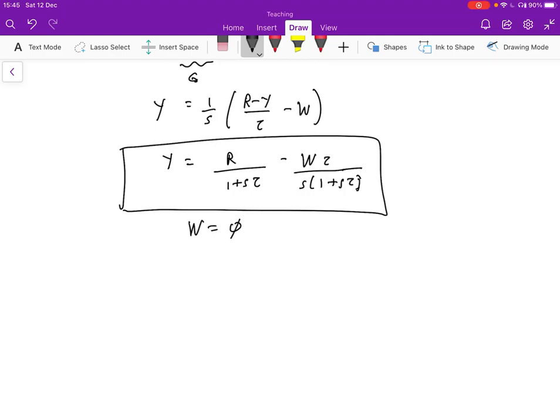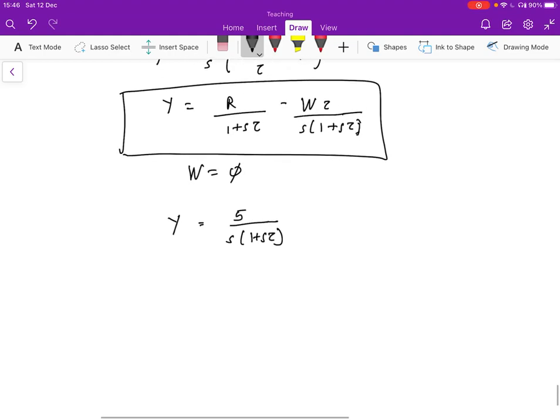And we are going to just see what happens when we set R equals five over S. So Y is going to be then five over S times one plus S tau. And so Y of T is the inverse Laplace transform of that. And that's going to be given by five over S minus five over S plus one over tau. That's the partial fraction expansion.